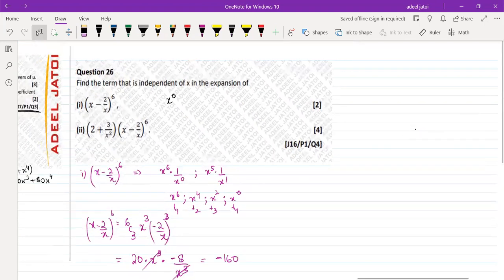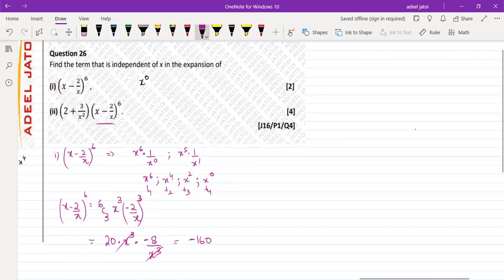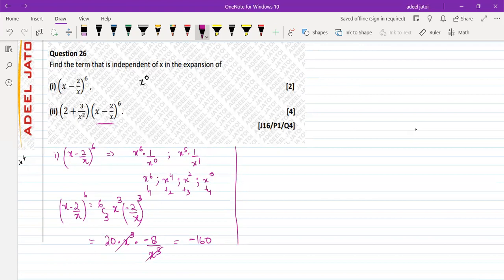For part 2, what you need to understand is that there is bracket already given. And for that purpose, if we want to solve this thing down, we'll write down 2 plus 3 upon x square. And let's just write down the term value. x to the power 6, x to the power 4, x to the square, x 0.